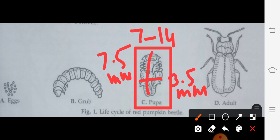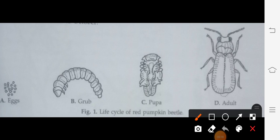Then it will convert into the adult. The adult starts feeding and reproduction after 7 days of emergence.